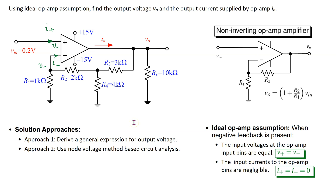We will solve the circuit using the ideal op-amp assumption. This assumption states that when negative feedback is present, the input voltages at the op-amp input pins, denoted by V plus and V minus, become equal. Also, the input currents to the op-amp pins, denoted by I plus and I minus, are zero. In other words, under negative feedback, the op-amp internal circuitry works such that the output voltage attains a value needed to force V plus equal to V minus, and the currents I plus and I minus to be zero.